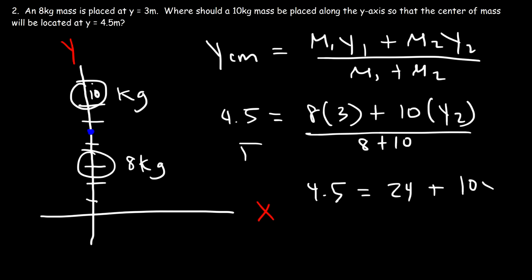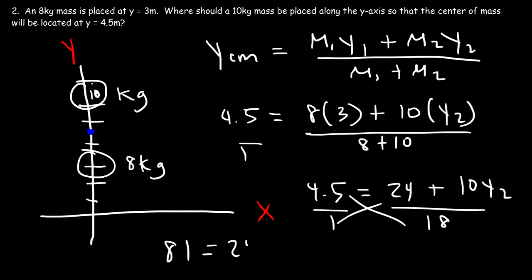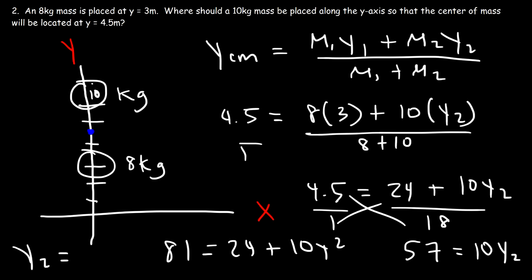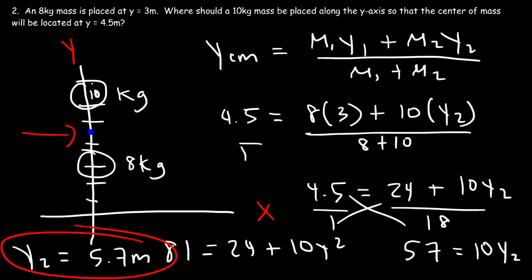So we have 4.5 equals 8 times 3 which is 24, divided by 18. Cross multiplying: 4.5 times 18 is 81, and that equals 24 plus 10·y2. Subtracting 24 from both sides: 81 minus 24 is 57, so 57 equals 10·y2. Dividing both sides by 10, the position of the second mass should be at 5.7 meters if we want the center of mass to be at 4.5.